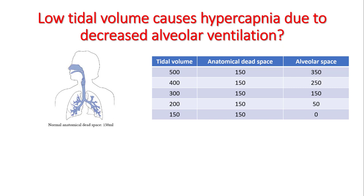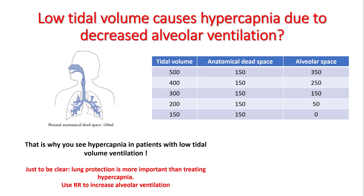If you're breathing at 500 cc, your anatomical dead space is around 150 cc and alveolar ventilation is 350 cc. As your tidal volume drops to, say, 300 cc, anatomical dead space ventilation remains the same, but alveolar ventilation drops to 150 cc. If your tidal volume approaches the anatomical dead space, alveolar ventilation drops to zero. Since it's alveolar ventilation that results in CO2 removal, if you are using low tidal volume ventilation, expect some hypercapnia. Lung protective strategy is more important than treating hypercapnia.